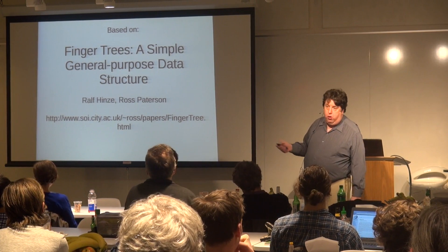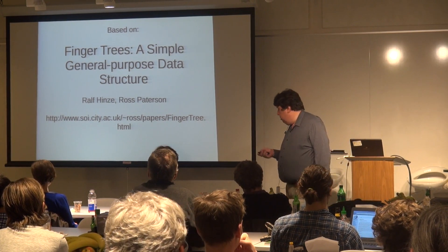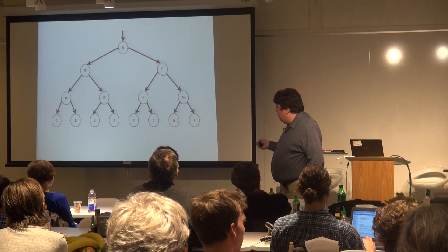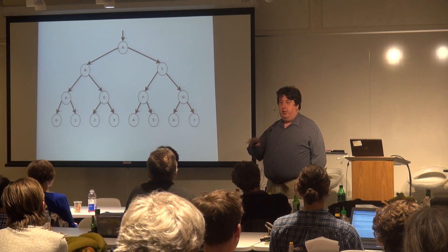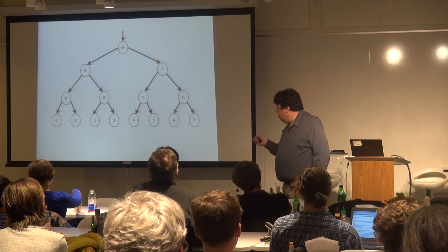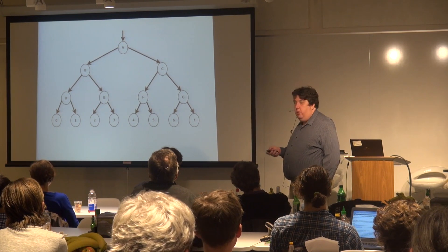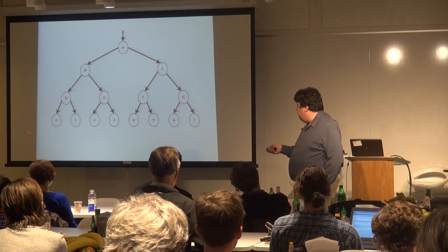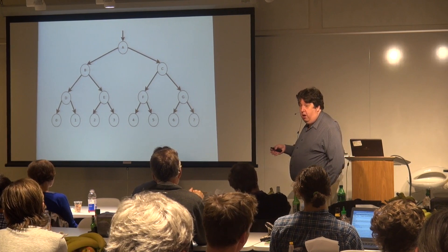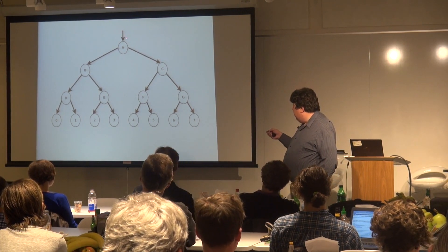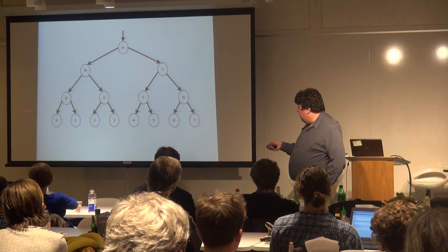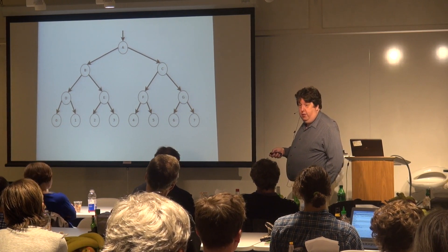We start with your standard binary tree. You can implement DQs with binary trees and they work, but the problem is when we want to add and remove stuff at the beginning and end of the sequence, we have to come in at the root and walk all the way down the spine to get to where we really want to be. So it's order log N exactly.